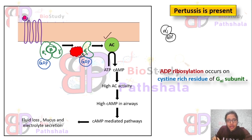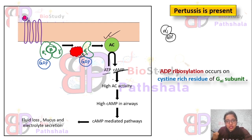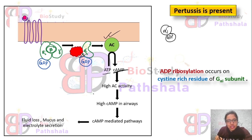This ADP ribosylation of the alpha-i subunit causes no inhibition on adenylate cyclase — meaning adenylate cyclase is not inhibited by alpha-i. So AC shows its activity and converts ATP into cyclic AMP. The intracellular concentration of cyclic AMP will therefore be high, and this high cyclic AMP concentration will trigger further responses — activating PKA, that is protein kinase A.